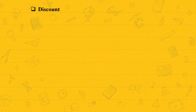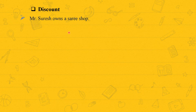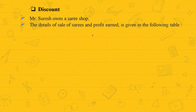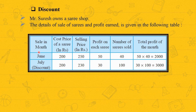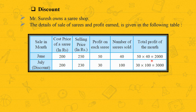Let us first understand the definition of discount with the help of an example. Mr. Suresh owns a saree shop. In the month of June, the cost price of each saree was Rs. 200 and he sold them for Rs. 250. Profit per saree is 250 minus 200, which is Rs. 50. In June, he sold 40 sarees, so total profit is 50 × 40 = Rs. 2000.